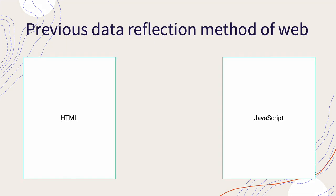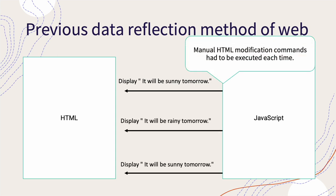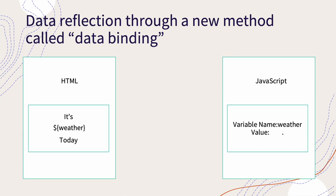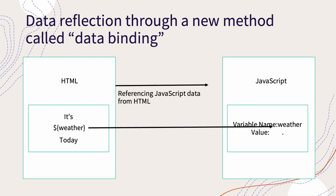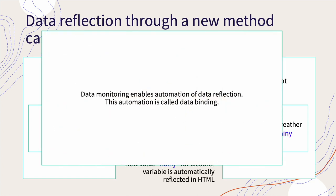In the previous data reflection method, when reflecting JavaScript data to HTML, it was necessary to execute commands on the JavaScript side to modify the HTML each time the data was changed. In contrast, the new method of reflecting data in HTML, called data binding, references JavaScript from HTML and automatically reflects data whenever JavaScript data changes. This is achieved through the actions of frameworks and compilers.